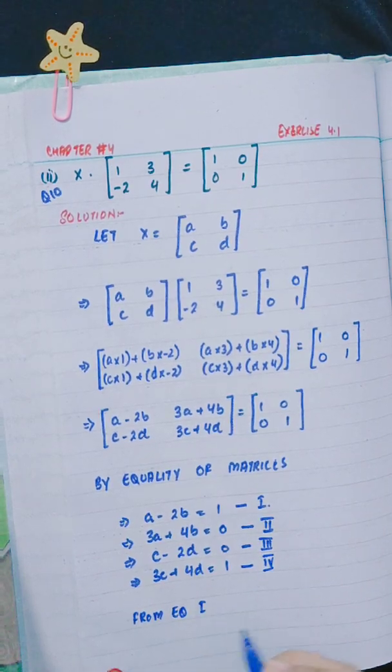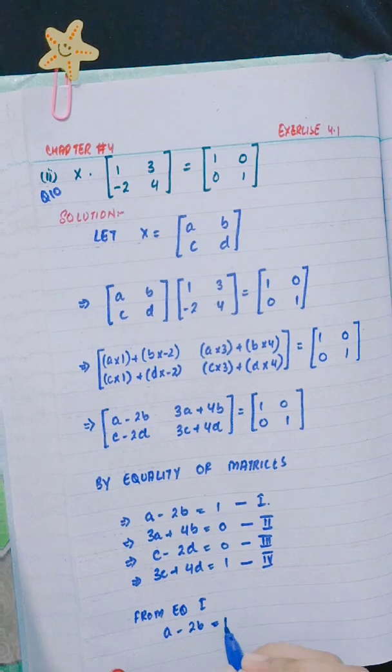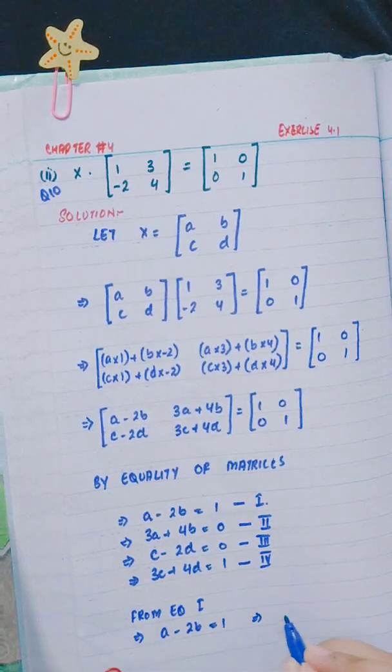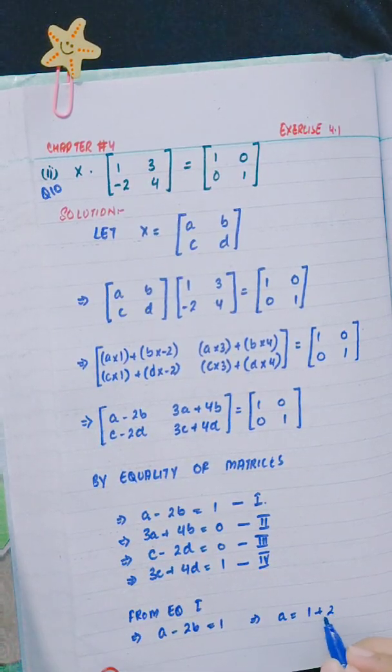From equation 1: a - 2b = 1, so a = 1 + 2b.